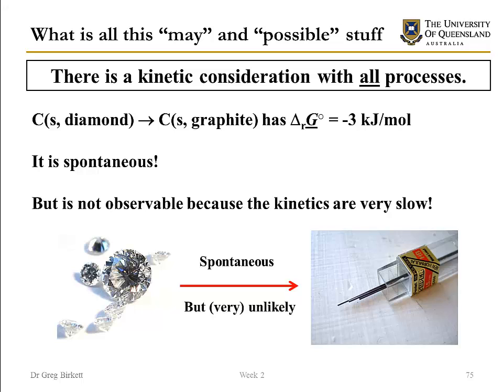Again, this is what is possible to do — there's a kinetic consideration before making decisions. A good example is that diamonds aren't as thermodynamically favourable as graphite, so graphite is more stable than diamonds. In principle, the conversion of diamond to graphite is a spontaneous process. But you'll never see it happen because the kinetics are very, very slow — thankfully, otherwise lots of people will have wasted lots of money.